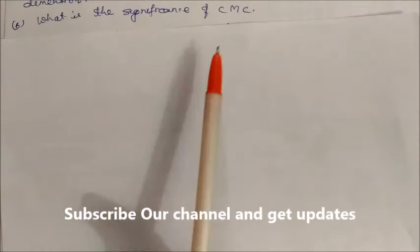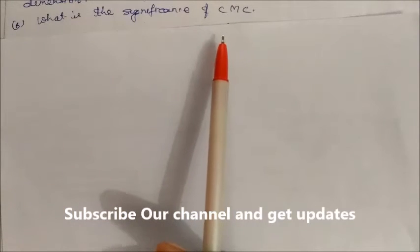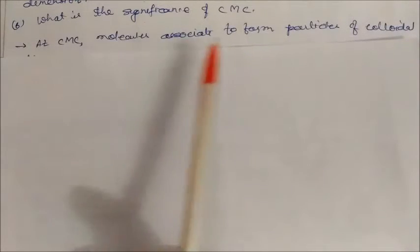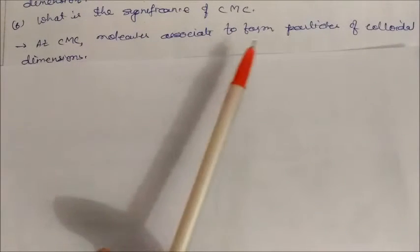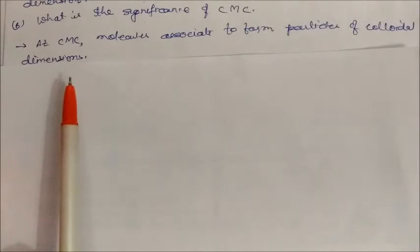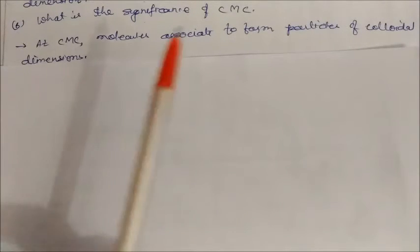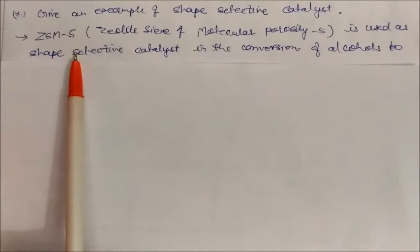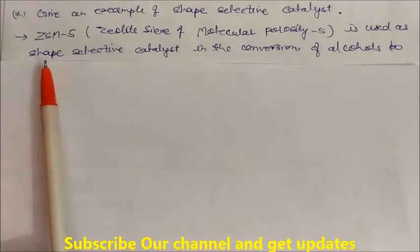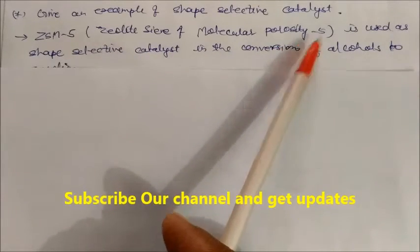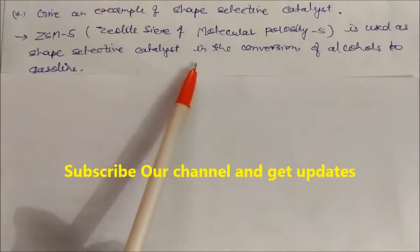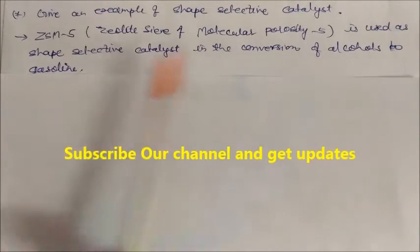What is the significance of CMC? CMC is called the critical micellar concentration. At critical micellar concentration, the molecules associate to form particles of colloidal dimensions. Give an example of a zeolite selective catalyst. ZSM-5 is the example, which is zeolite sieve of molecular porosity 5, used as a zeolite selective catalyst in the conversion of alcohol to gasoline.